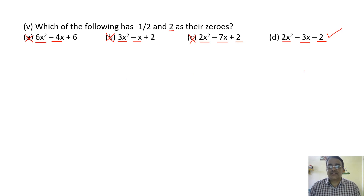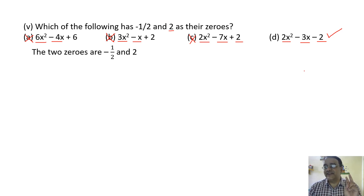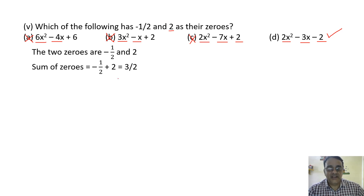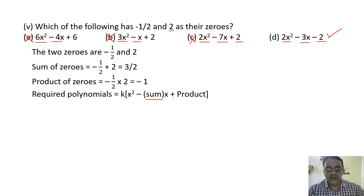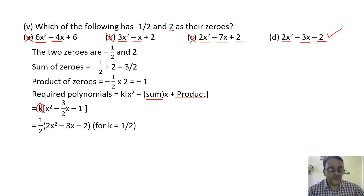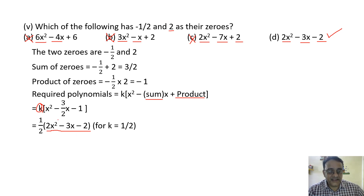So the answer is option D by elimination method — the best method for MCQ. To verify with the original solution: zeros are minus 1 by 2 and 2. Sum equals minus 1 by 2 plus 2 equals 3 by 2. Product equals minus 1. Using the formula k into x squared minus sum into x plus product, substituting sum 3 by 2 and product minus 1, then taking 1 by 2 outside gives the required polynomial 2x squared minus 3x minus 2. The correct option is D.